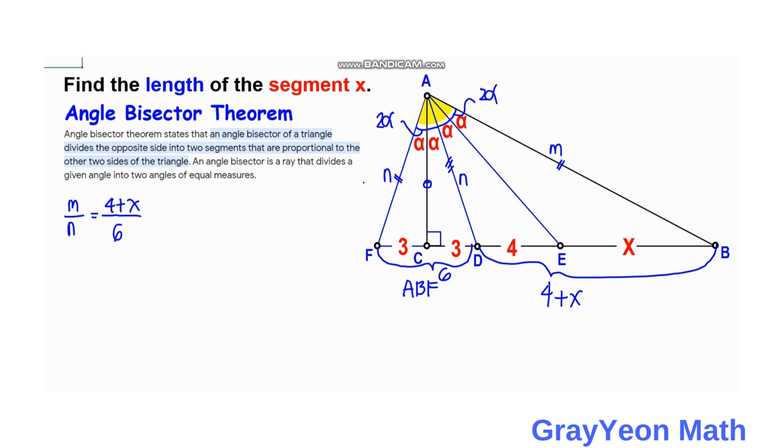Next, we focus on triangle ADB. The angle bisector is AE, and the two segments that are subdivided are 4 and x. It is proportional to the two segments M and N.